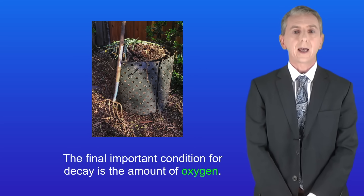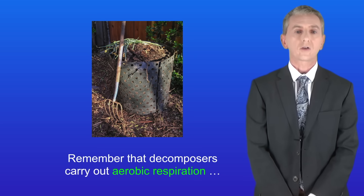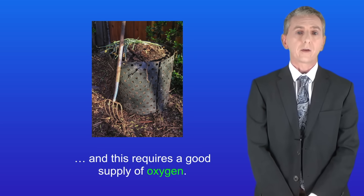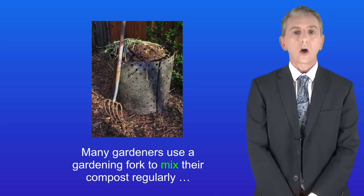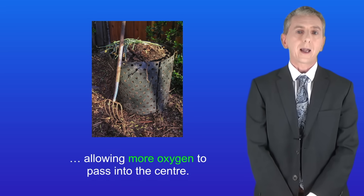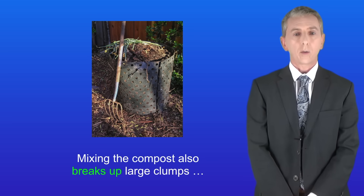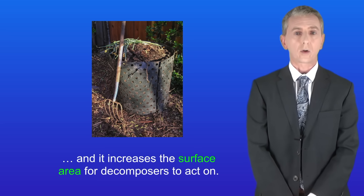The final important condition for decay is the amount of oxygen. Remember that decomposers carry out aerobic respiration, and this requires a good supply of oxygen. This compost bin has holes in the walls to allow oxygen to enter, and many gardeners use a gardening fork to mix their compost regularly, allowing more oxygen to pass into the centre. Mixing the compost also breaks up large clumps and increases the surface area for decomposers to act on.